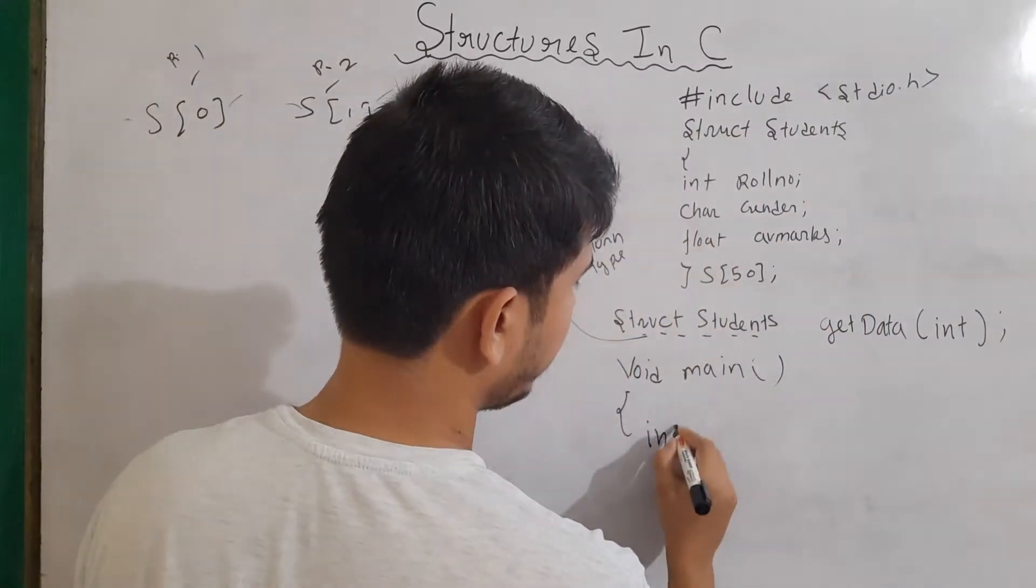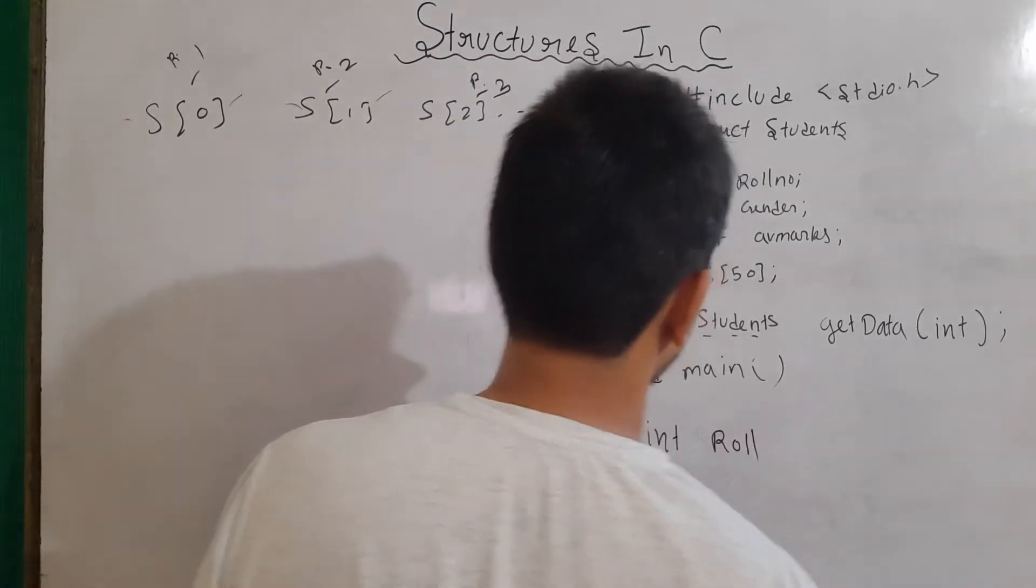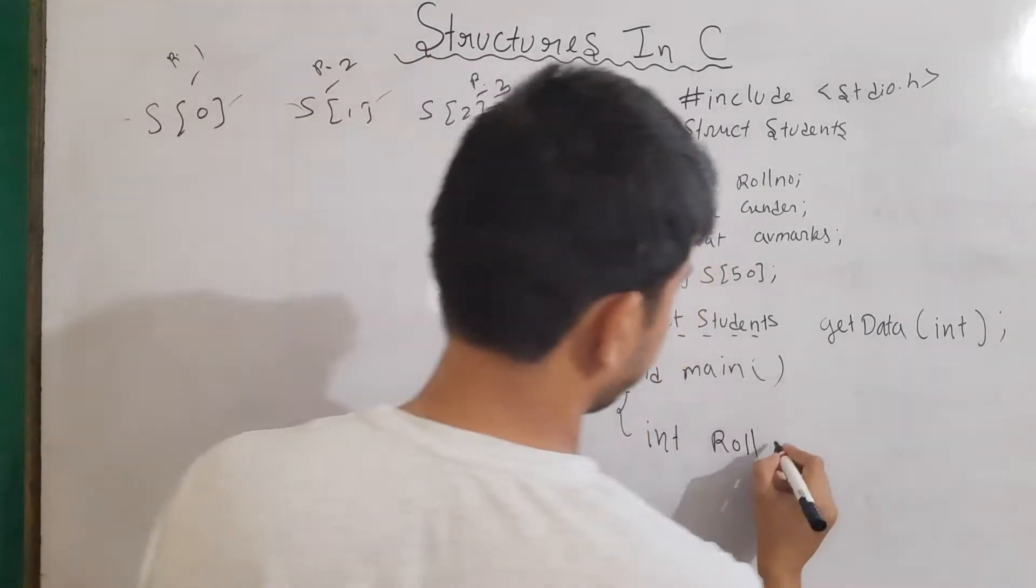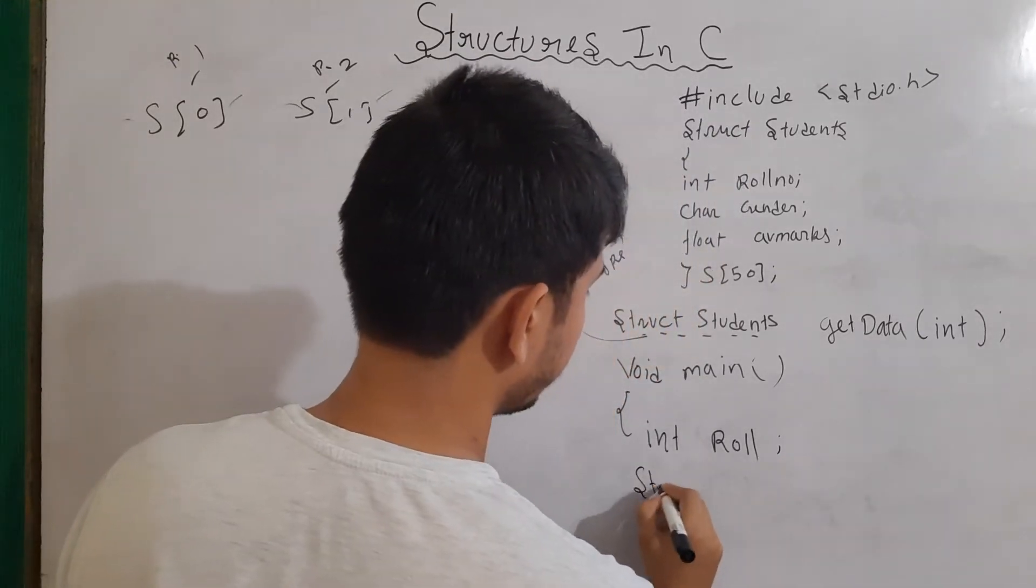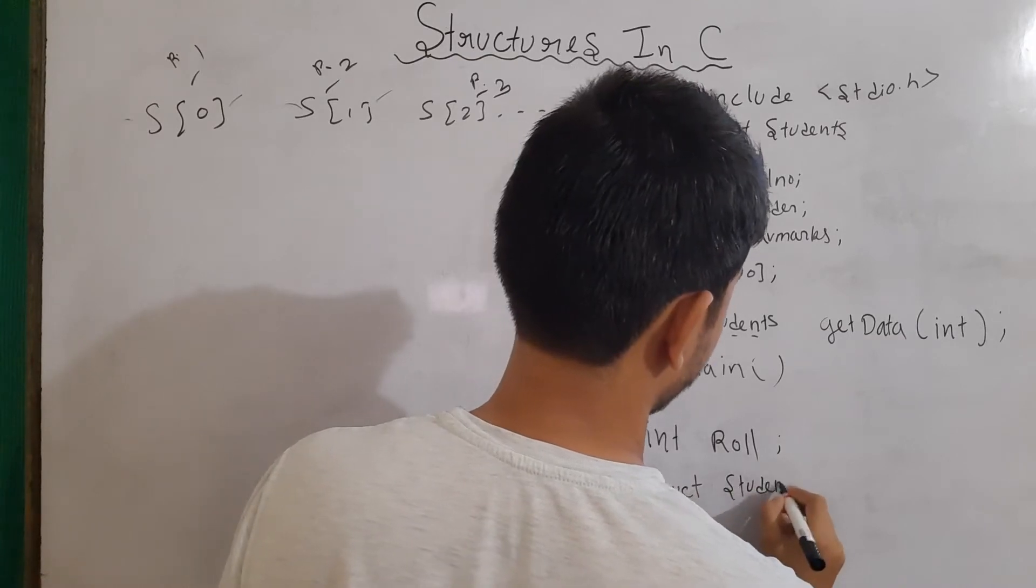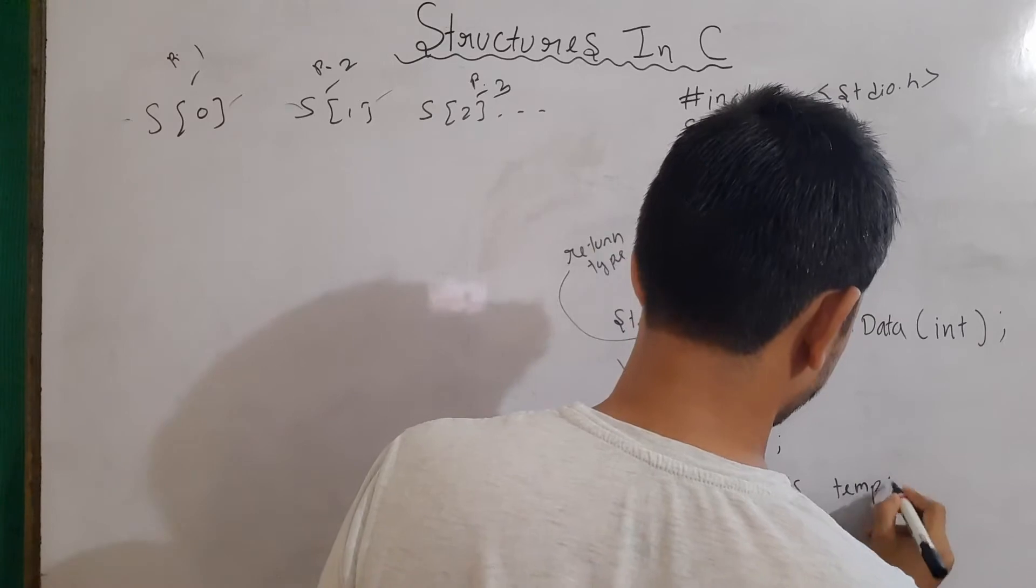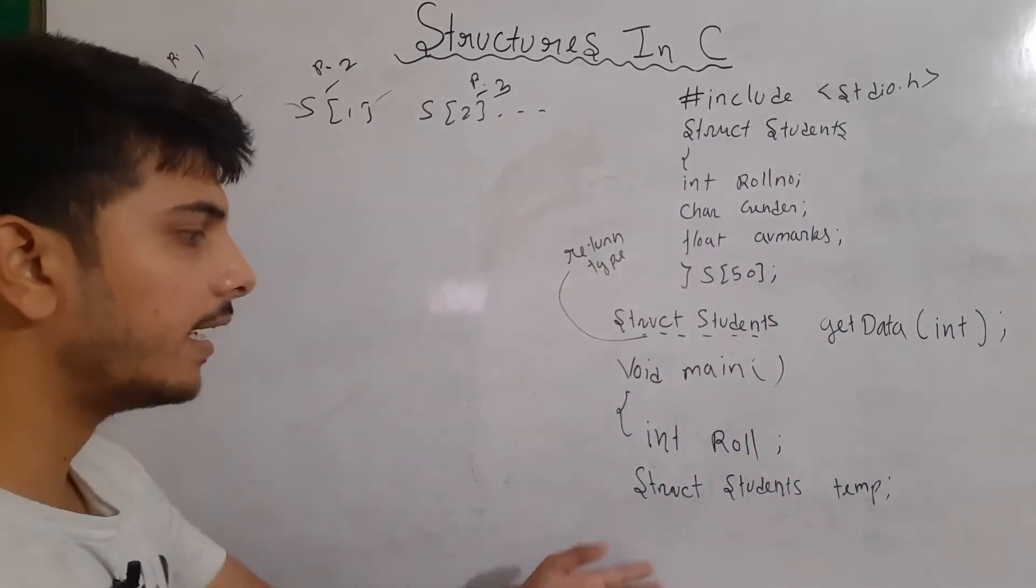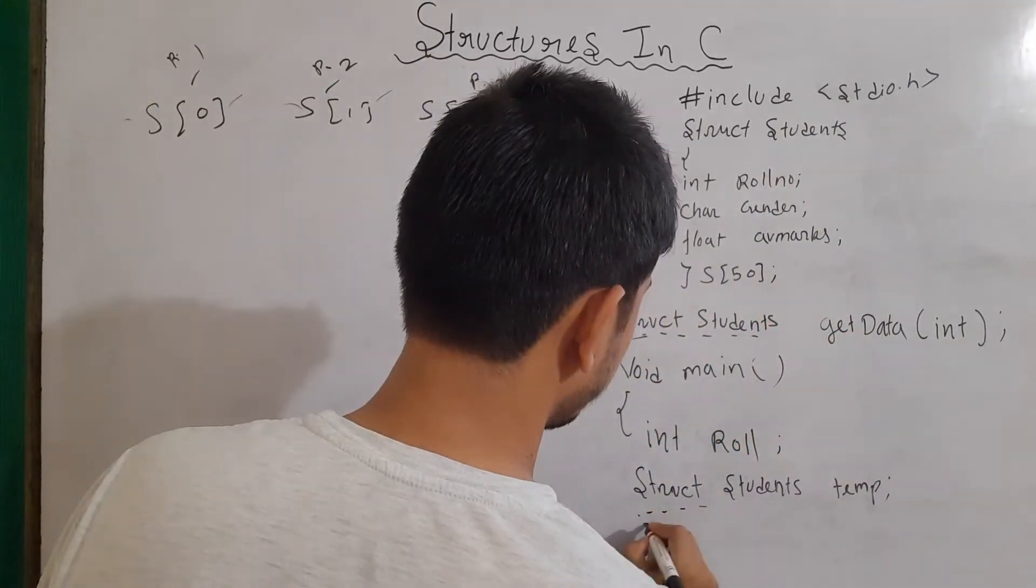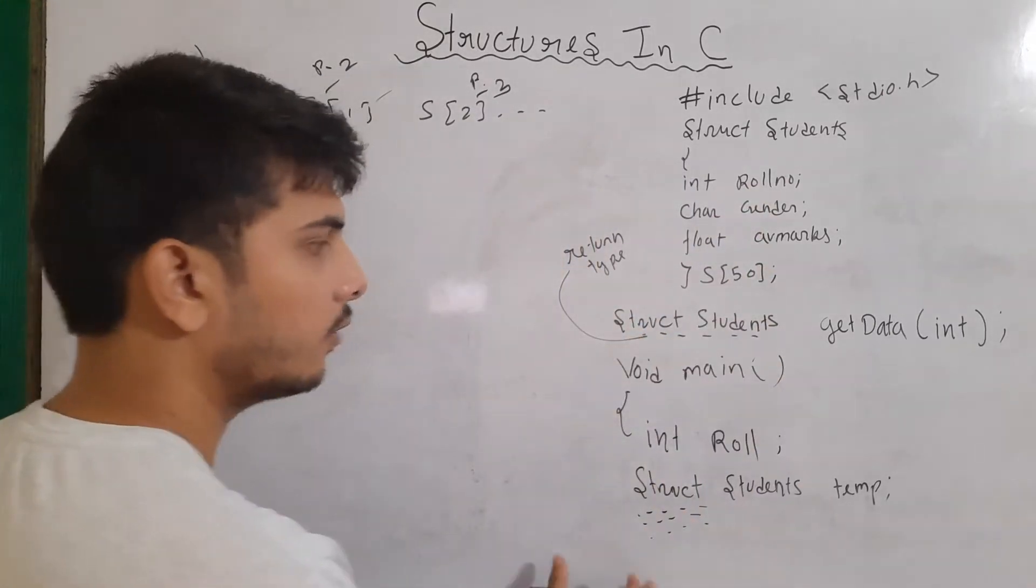Now, I will make here some variable. Let's say, first of all, a variable for holding role number. So, I'm writing here only role and then an additional structure variable struct students. And then, let's say, temp. Now, after that, here, I'm assuming that all the code for storing the information has been written already.